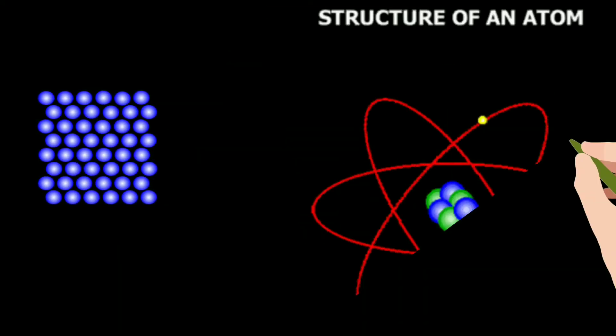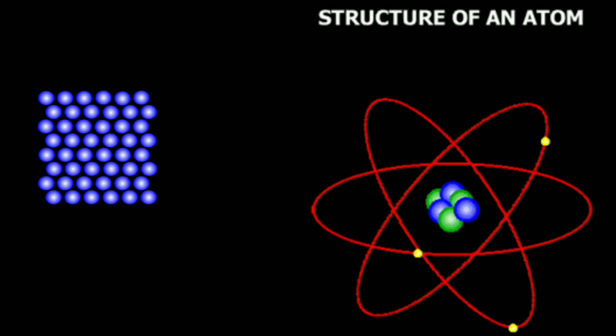Consider this solid object. We see that this solid object is made up of atoms which are tightly packed together. Of course, we cannot see it with the naked eye, but with the help of electronic microscope we will be able to see it.